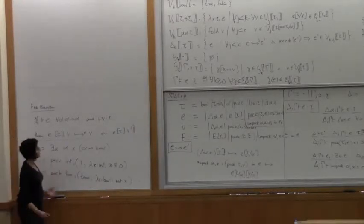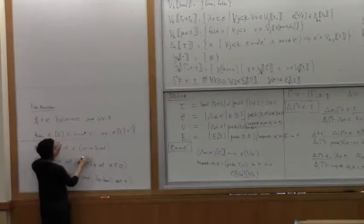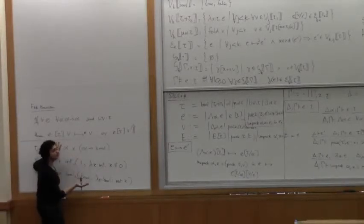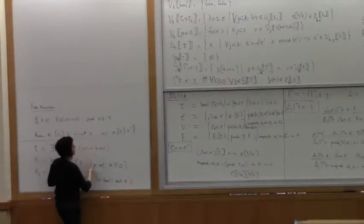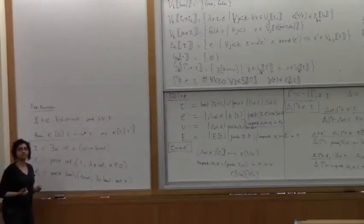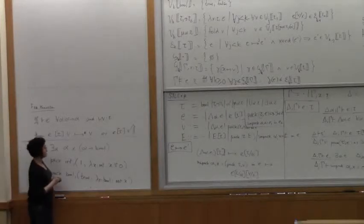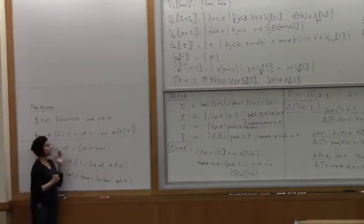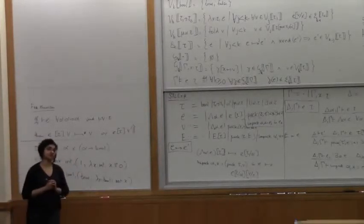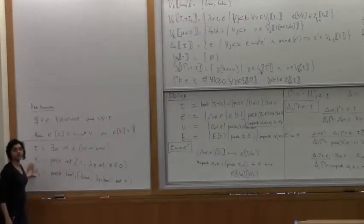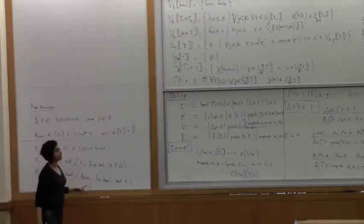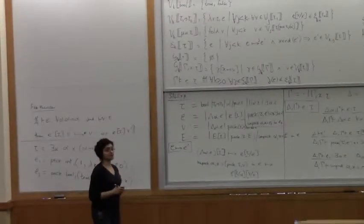So if you unpack these packs and you take out the first component and the second component, basically, the only interesting thing you can ever do with it is take out the first component and take the second component and apply it to the first. Because otherwise, you can't use this function in any other way because you can never supply it with an alpha. Nothing else will type check. So basically, these two packages are equivalent, no matter what context you plug them into. And logical relations, the binary logical relations that we want to start setting up, give you a method for proving that.